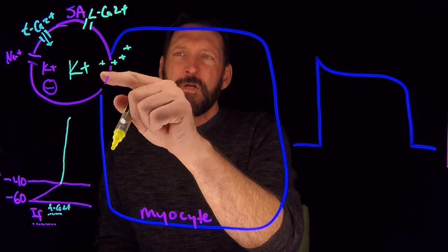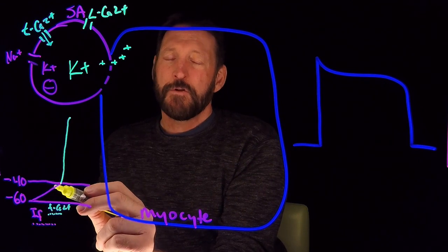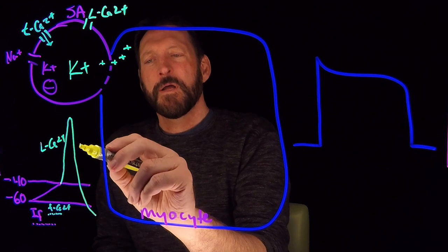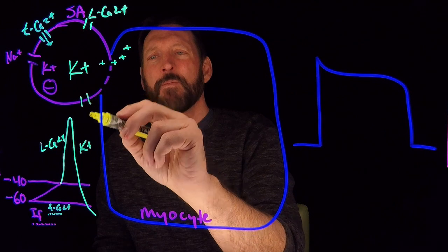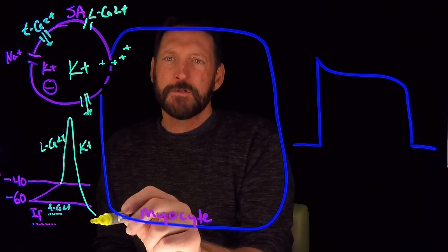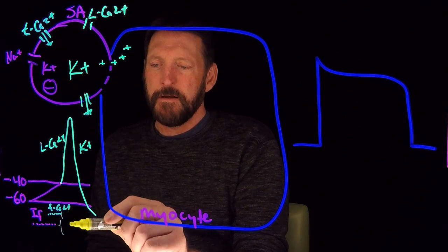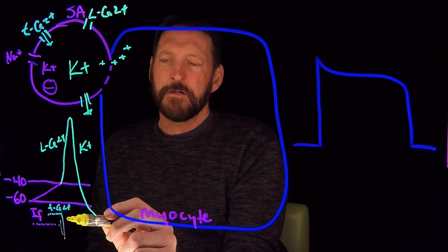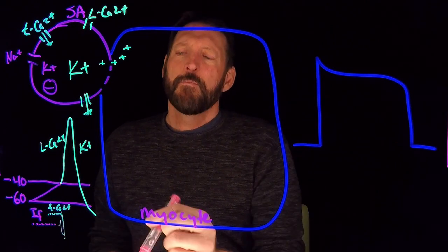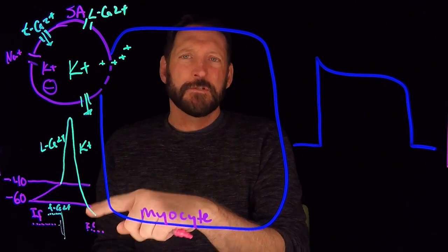As the cell moves in the depolarization direction, the IF channels close, the T-type calcium channels close, and the L-type calcium channels are open. Then the potassium channels open — potassium moves out, taking its positive charge with it, moving back toward resting membrane potential. During repolarization, the IF channels pop back open again. That's why they're called ion funny: most channels open during depolarization, but these open during repolarization. This just happens time and time again.